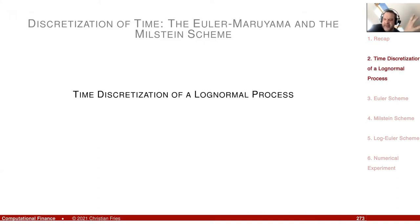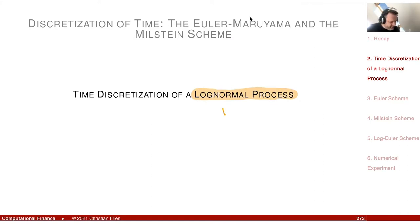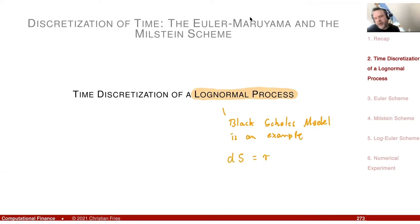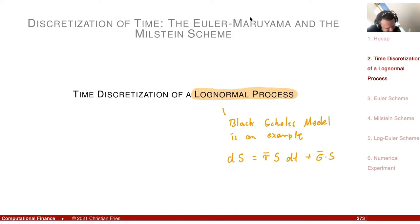I would like to compare these schemes in the time discretization of a log-normal process. A log-normal process — the Black-Scholes model is an example. In the Black-Scholes model, the coefficients are of the form r times S dt plus sigma-bar times S dW. So the coefficients are proportional to S.